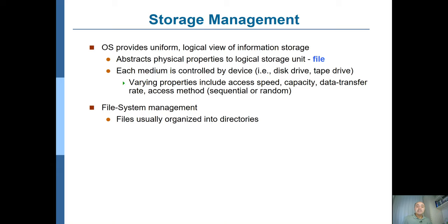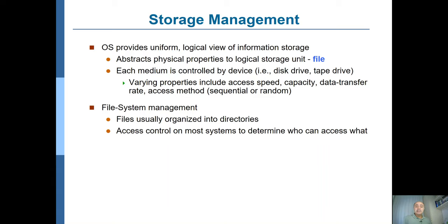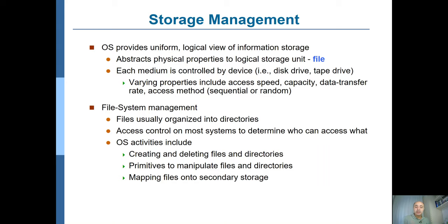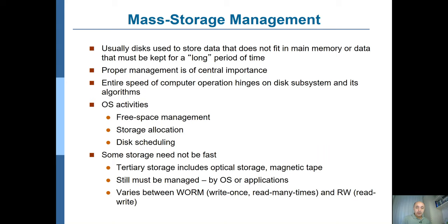For file system management, we want to store information in files and organize them in directories. Access control determines who can access which file. OS activities include creating and deleting files and directories, providing primitives to manipulate them — like changing permissions, moving, and copying — mapping files onto secondary storage such as specific cylinders on a disk, and backing up files onto stable non-volatile storage media.